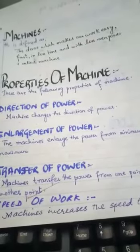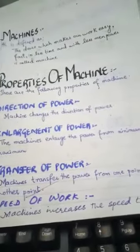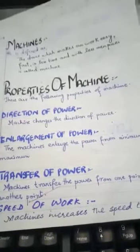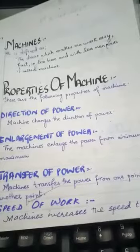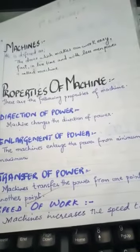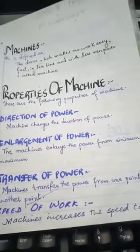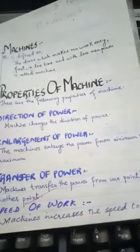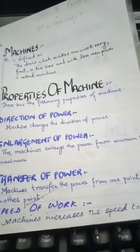Like, agar hum cycle drive kar rahe hai, to kya hota hai? Kye, hum aapne pairon ki kuvert ya aapne pairon ki power transfer kar rahe hotate wheels mein. To, uski wajah se, hum aapne pairon ki power transfer ho rahe hoti hai from our feet to the wheels of the cycle. So, we can drive easily.